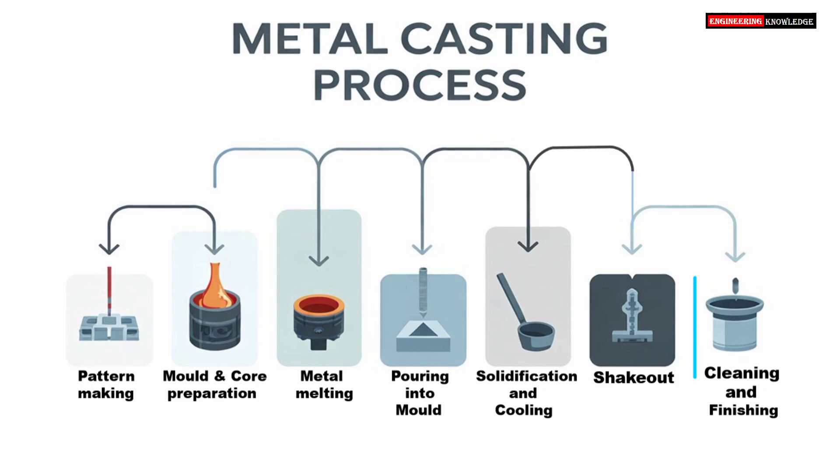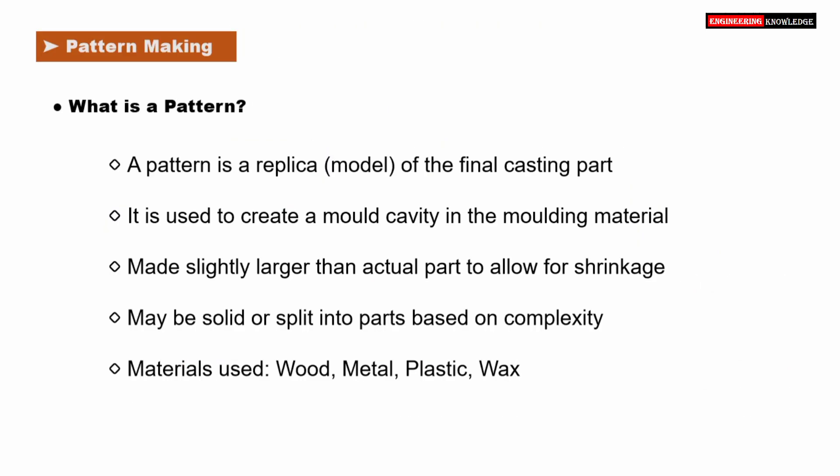Finally, the casting is cleaned and finished to get the final usable part. A pattern is a replica or model of the final casting part. It is used to create a mold cavity inside the molding material. The pattern is made slightly larger than the actual part to allow for shrinkage during cooling. Depending on the complexity of the shape, the pattern can be solid or split into multiple parts.